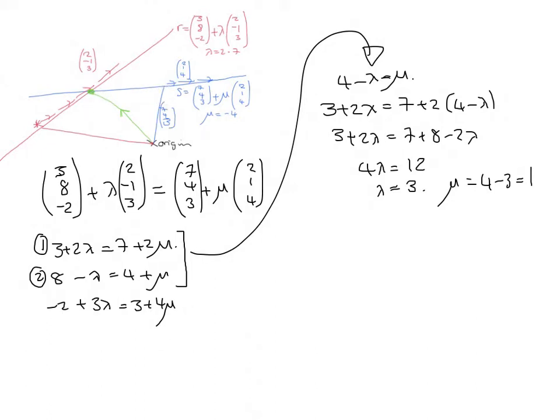So, have I established what the coordinates of the green dot are? No, I haven't. That's still a job to do. I'll do it now. I'll do it in green since it's a green dot. So, how would I get to the green dot? I could use the red line and do (3, 8, -2), plus λ, which I've worked out as 3, three amounts of (2, -1, 3). That gives me 3 + 6, 8 - 3, and -2 + 9, which is (9, 5, 7).